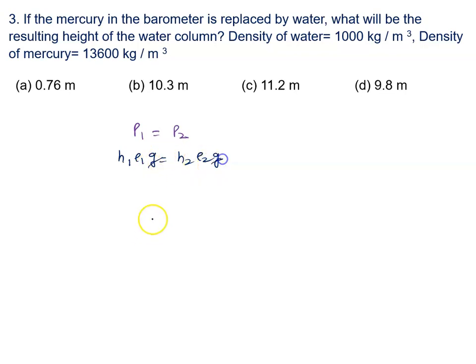So we will say h1 rho1 g equals h2 rho2 g. g will be canceled. Height of the water column h2 will be written as h1 rho1 upon rho2. What is the value of h1? h1 is given by mercury column, so it will be 76 centimeter.